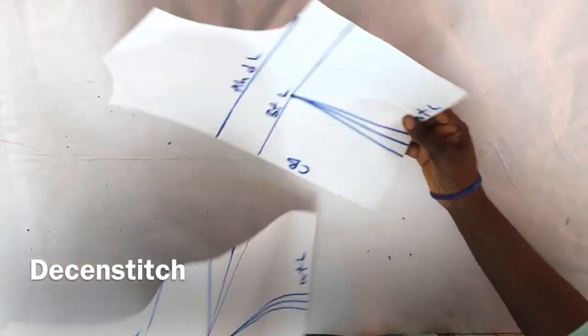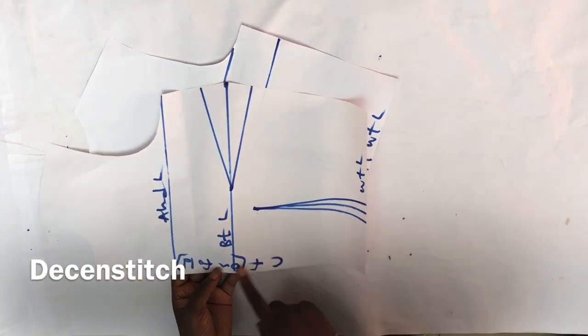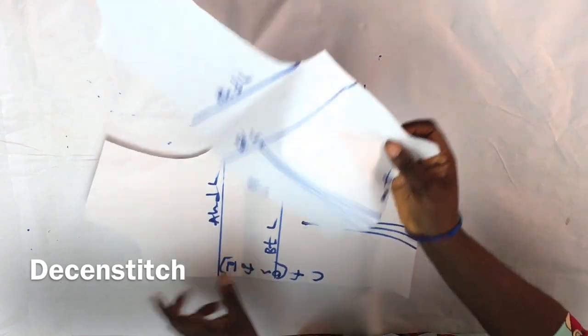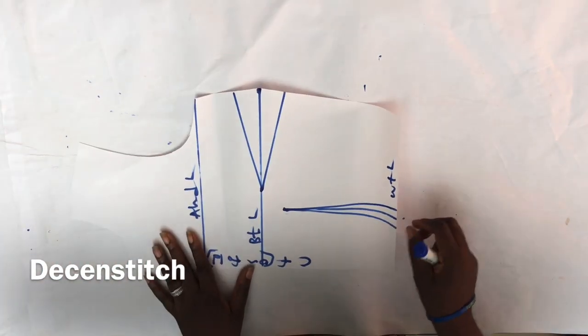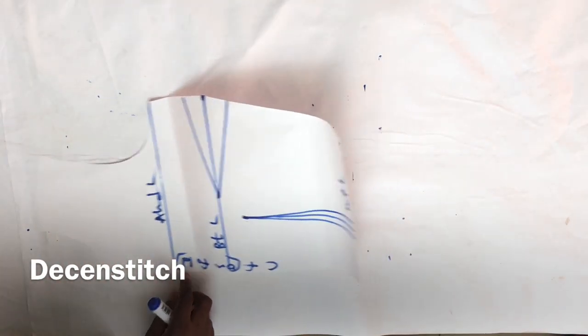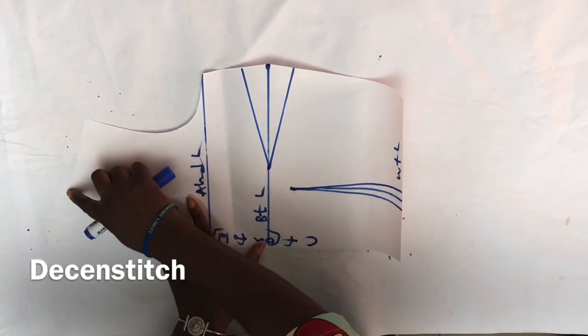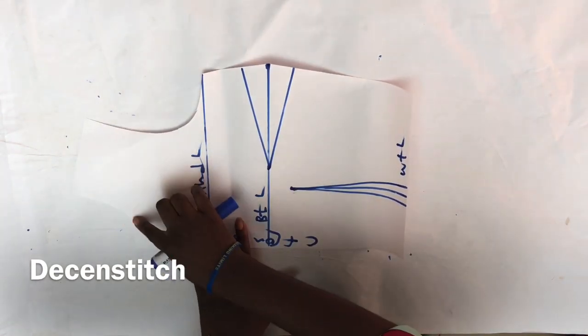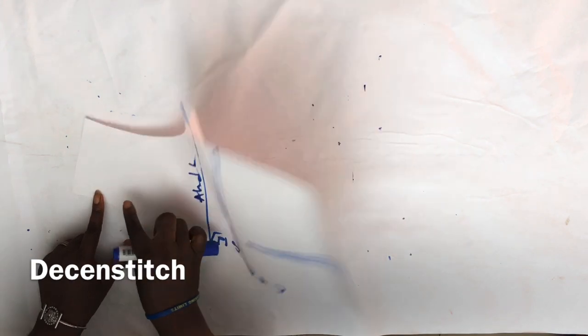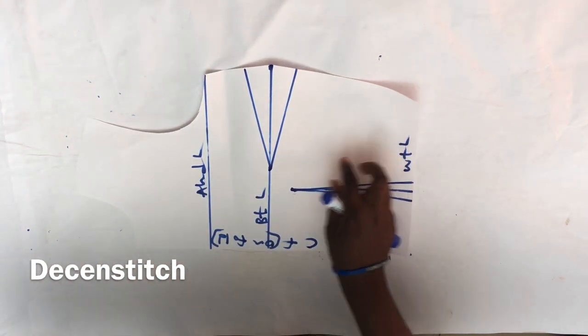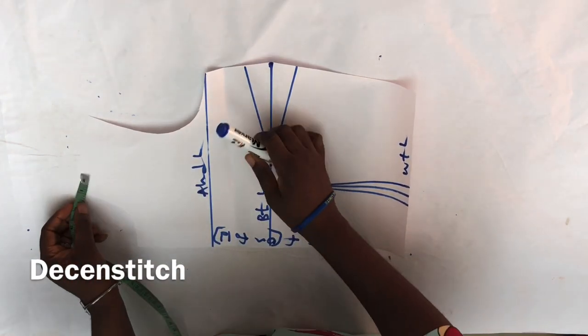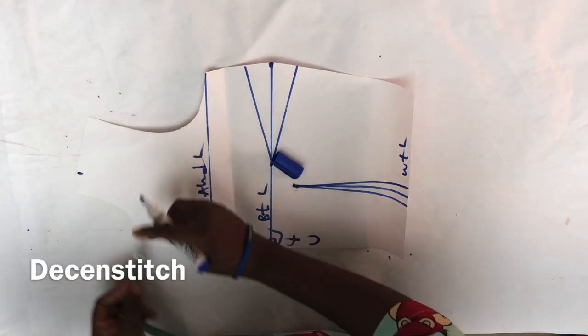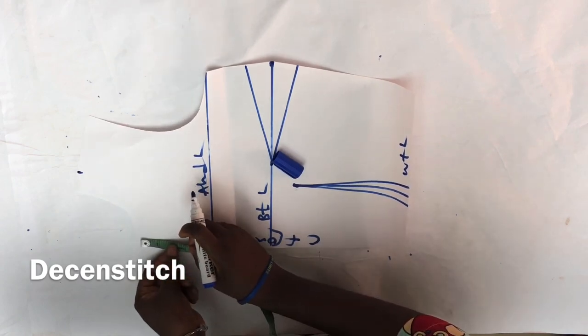This is my front and back bodies. I'm going to be starting with the front piece. The first thing I'm going to do is to increase my neckline. This neckline is very fitted, so I'm going to increase it. I'm going to increase the neck width by one inch and also the neck depth by one inch.